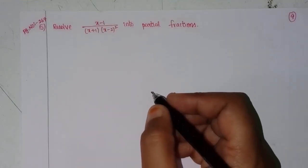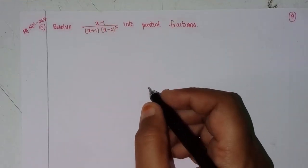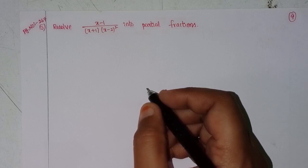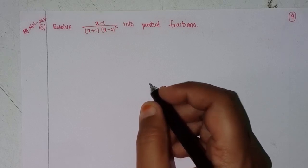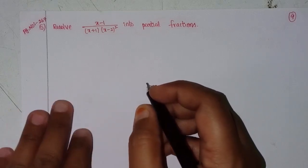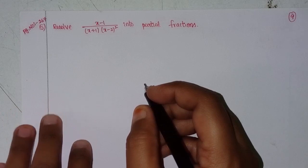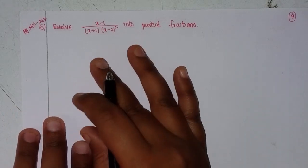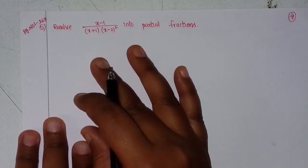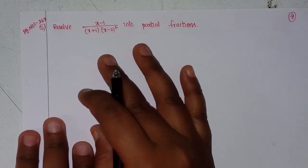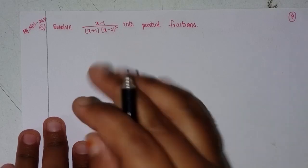Welcome back to our channel. Today we will discuss Intermediate Secondary 2a, Chapter 7, Partial Fractions — before Exercise 7a, 5th problem. Solve problem 267, page number 1.